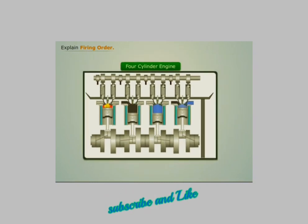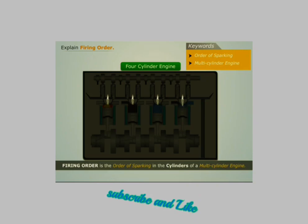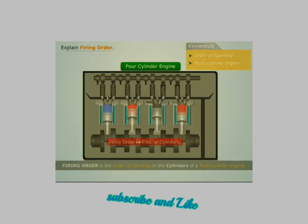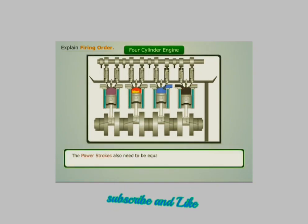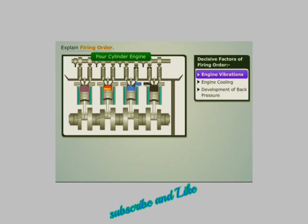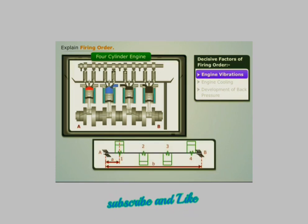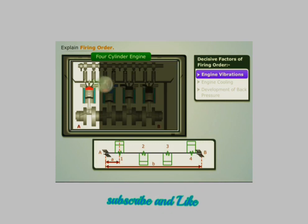Thus we can define firing order as the order of sparking in the cylinders of a multi-cylinder engine. Firing order depends on the number of cylinders in the engine. The power strokes need to be equally placed to get balanced movement of the crankshaft. The three main factors affecting firing order are engine vibrations, engine cooling, and development of back pressure.